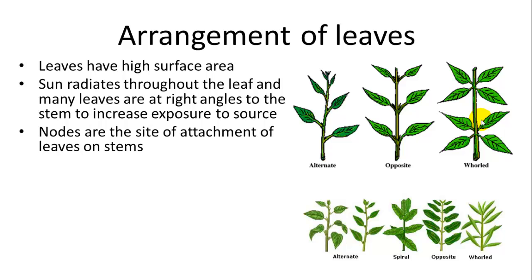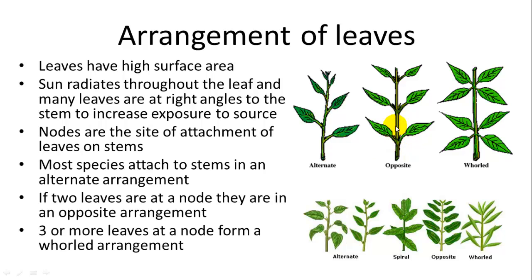Leaves generally have a high surface area to be exposed to sunlight, and they are oriented at right angles to the stem. They grow from nodes, while internodes are the parts of the stem where no leaves grow. Most species have an alternate pattern — a leaf on one side, then further up a leaf on the other side. Some are opposite, with two leaves from the same node, and some are whorled, with three or more leaves from the same node.